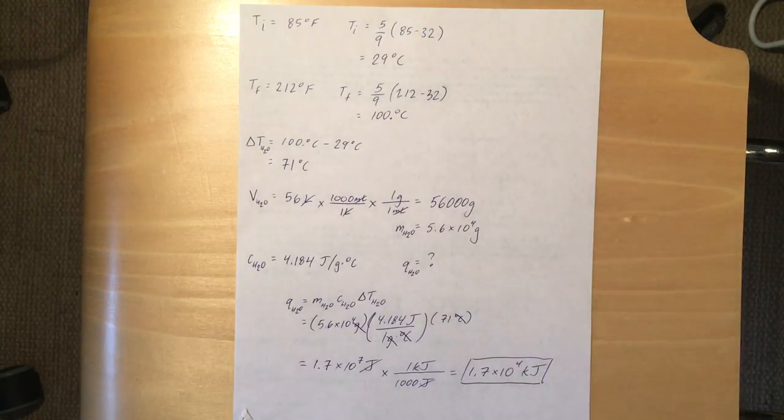And we have to remember that for every one liter, there's 1000 mils. So cancel out our liters. And then from there, cancel out our mils by remembering the density of water is one gram per mil. So we're going to get that number 56,000 grams.